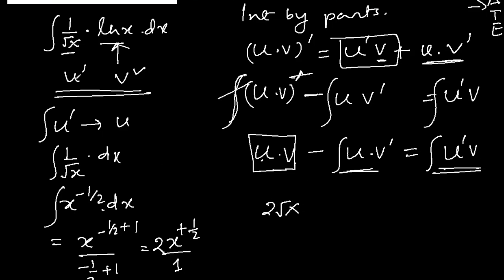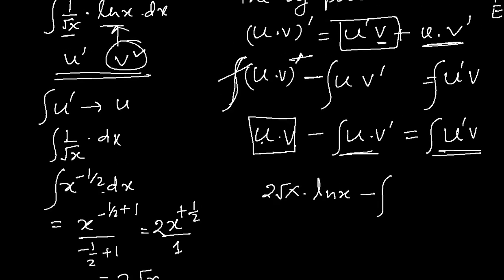V was already with us here, ln x, minus integration of U. U is, we just got it, 2 square root x here, 2 square root x. V prime is known to us, no, not known to us, V is known to us, this is V. We have to differentiate ln x.